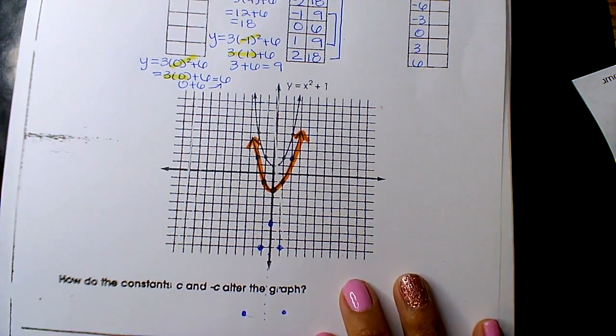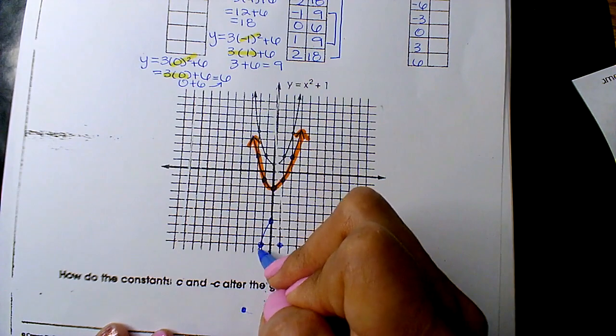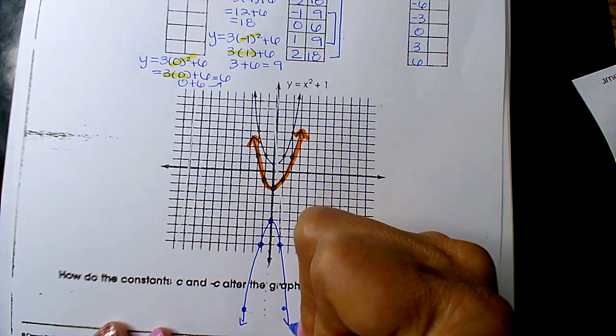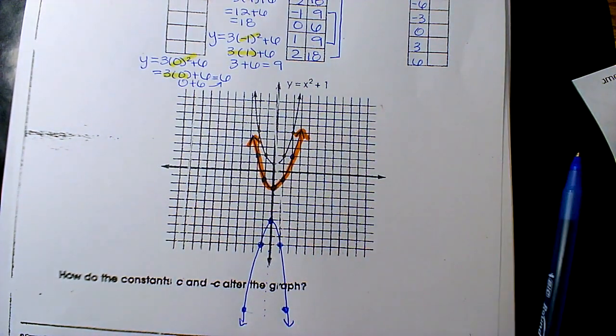All right, so here's my parabola. Yes, it's going off the grid, but I don't mind estimating. And so I'll make this one green.